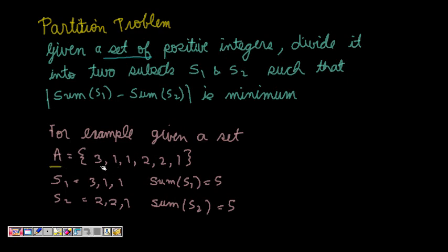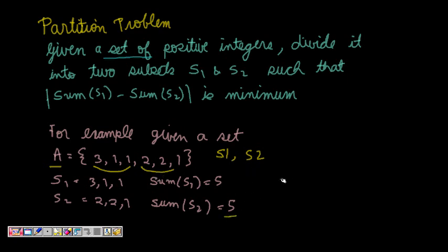Let's take one example. The set A is {3, 1, 1, 2, 2, 1} — six elements. We have to divide it into two sets S1 and S2 such that their difference of sums is minimum. We can take {3, 1, 1} as the first subset with sum 5, and {2, 2, 1} as the second subset with sum 5. So sum of S1 minus sum of S2 is 0, which is the minimum we can have.